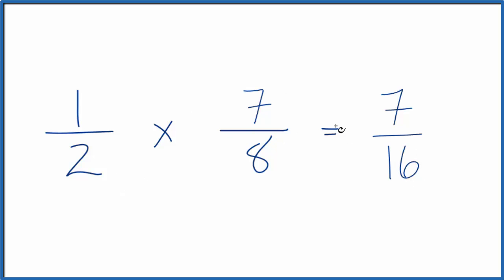So 1 half of 7 eighths, that's 7 sixteenths. We can't simplify this any further.